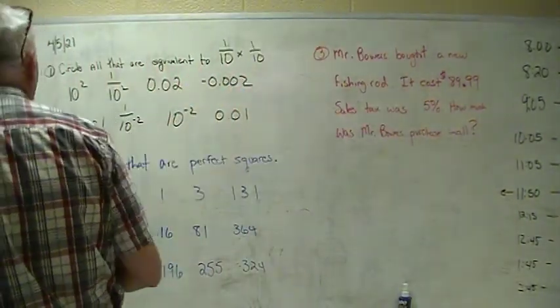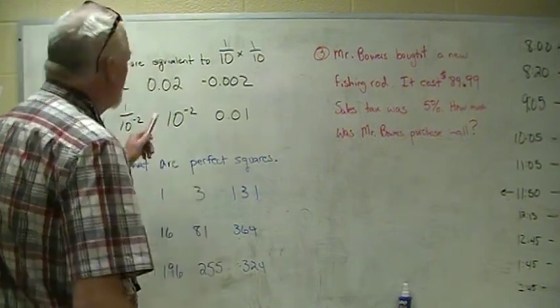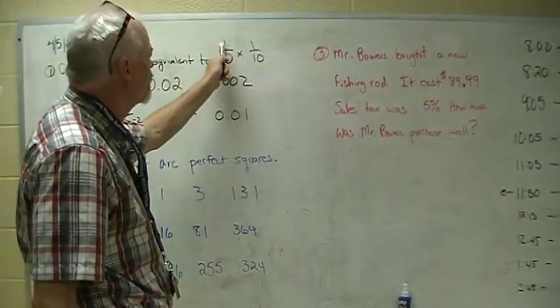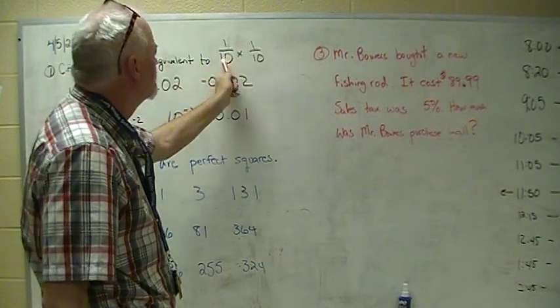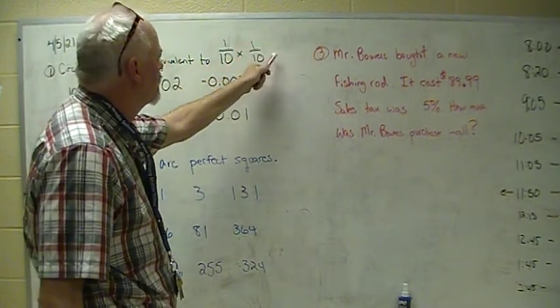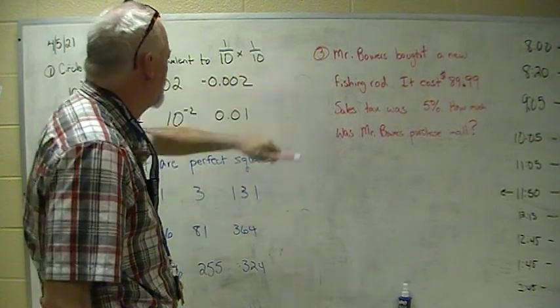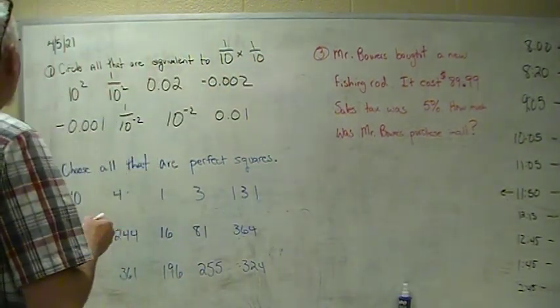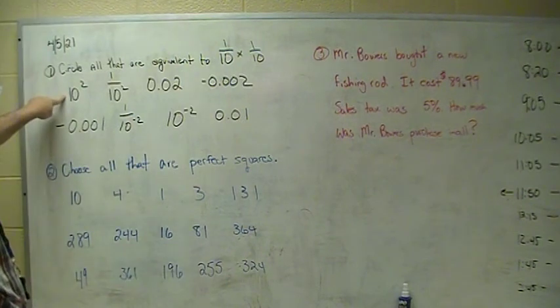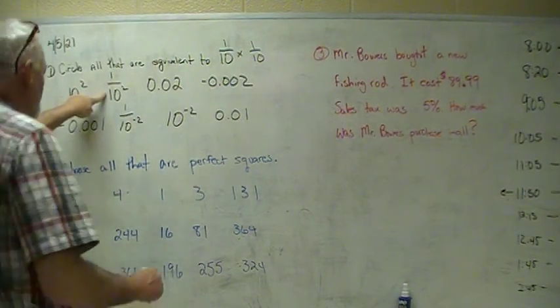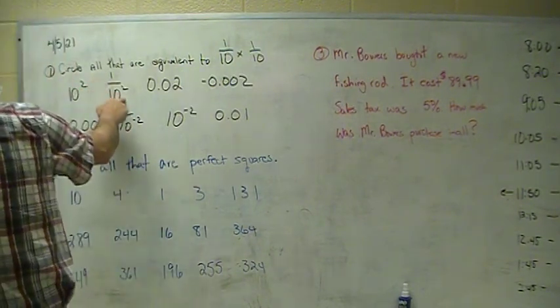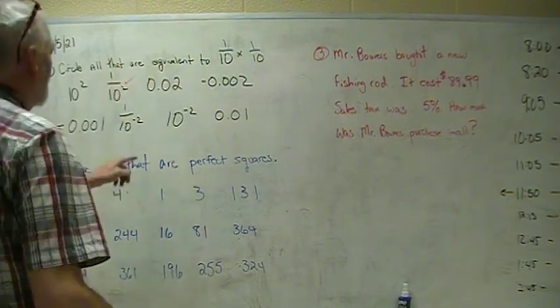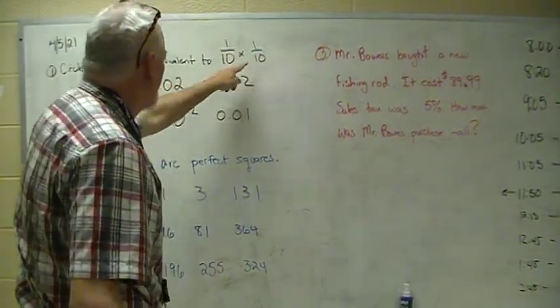Okay, so circle all that are equivalent to 1/10 times 1/10. This is a little bitty number. If we multiply these fractions, one times one is one, ten times ten is a hundred, so we're looking for something that's 1/100. That would be 100 - this is too big. 10 squared is 100. This one would work. So this answer - we need 1/100.